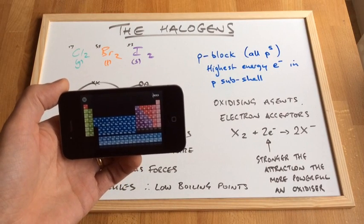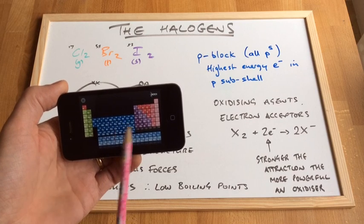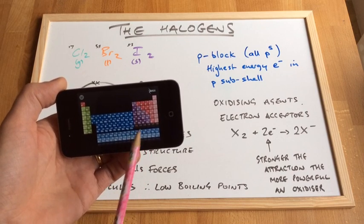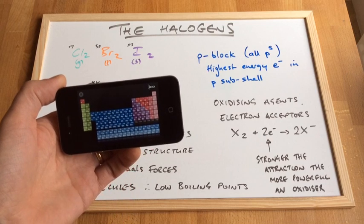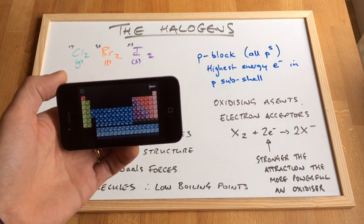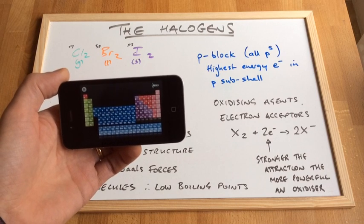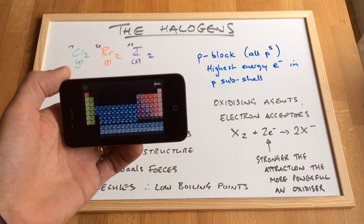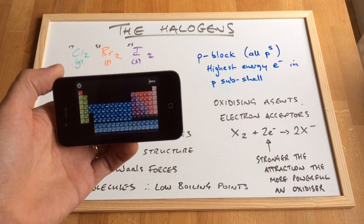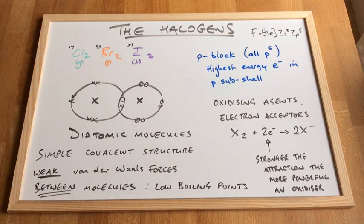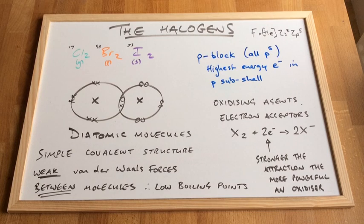The halogens are all in the P block — that's this part of the periodic table, group 7 just down there. They're called P block elements because their highest energy electron is in the P subshell. Their electronic configuration all ends in P5. For example, fluorine is: helium configuration, 2S2, 2P5. Chlorine would be 3P5, bromine 4P5, iodine 5P5, and so on.